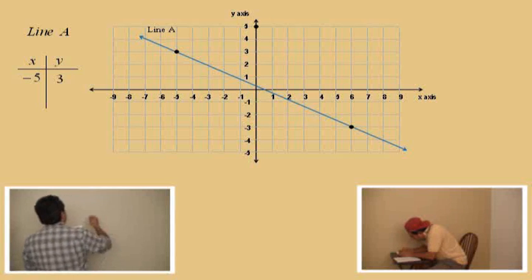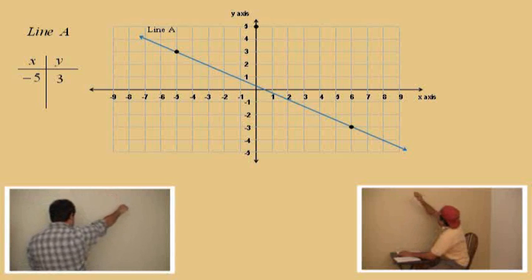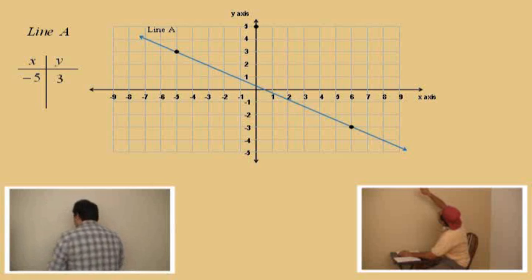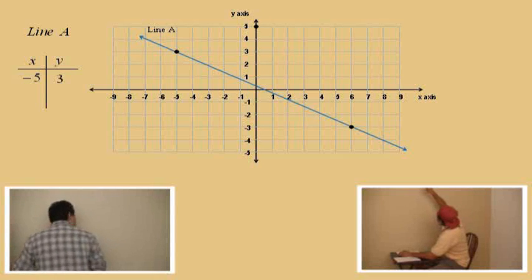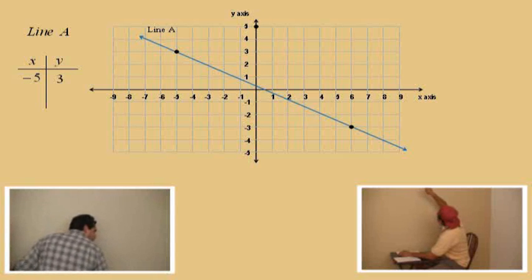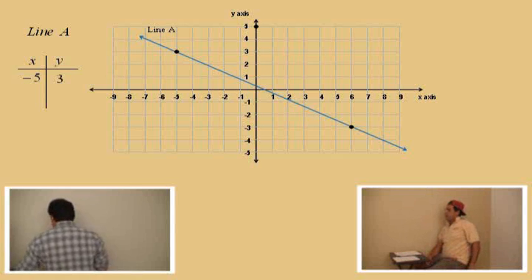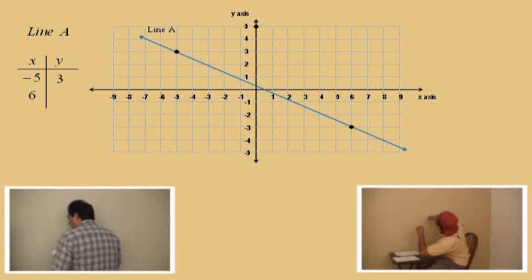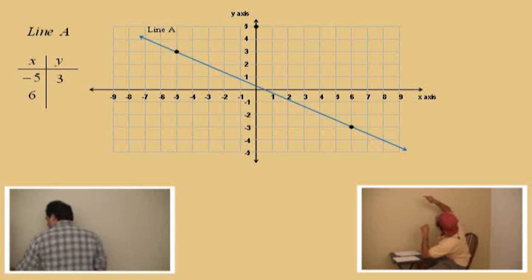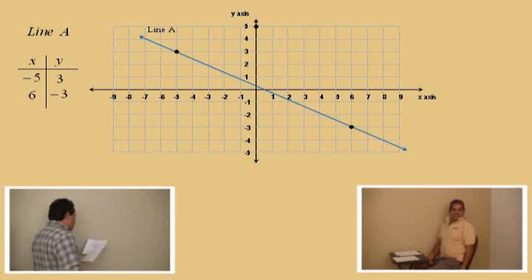Now, Charlie, we're going to go down the line here, and we're going to go to that other point, right over there. So, what's the X coordinate for that point, Charlie? Six. Very nice. And what's the Y value? Negative three. Very nice, Charlie.